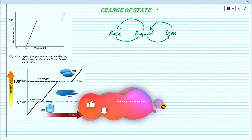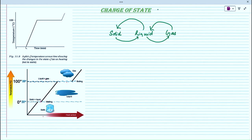For this we have to supply some amount of energy. For converting solid to liquid we must supply heat energy — that is, the system must be supplied some heat energy for the conversion of solid to liquid and liquid to gas. And for the conversion of gas into liquid and liquid into solid, we must remove the heat energy.